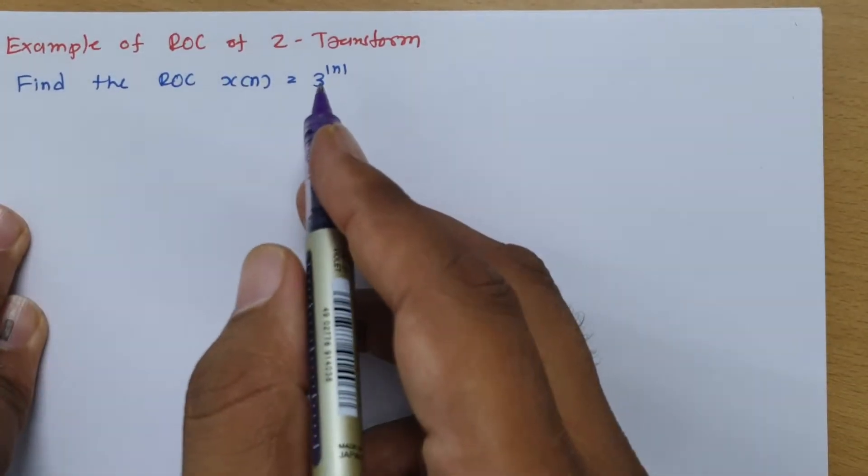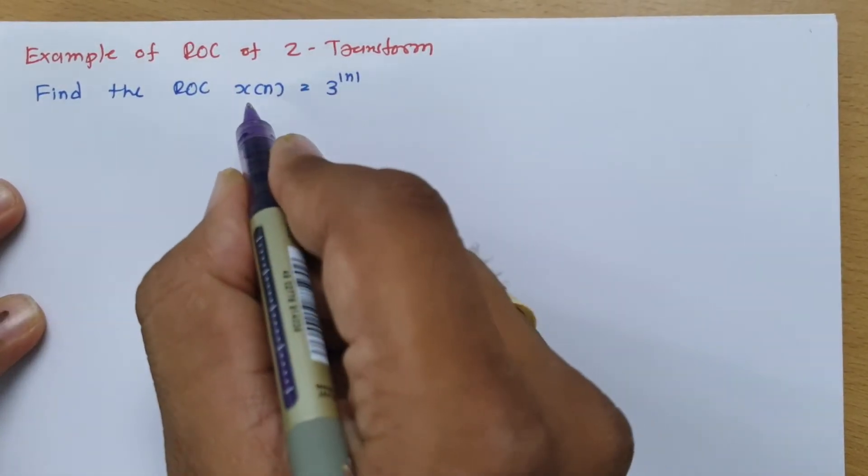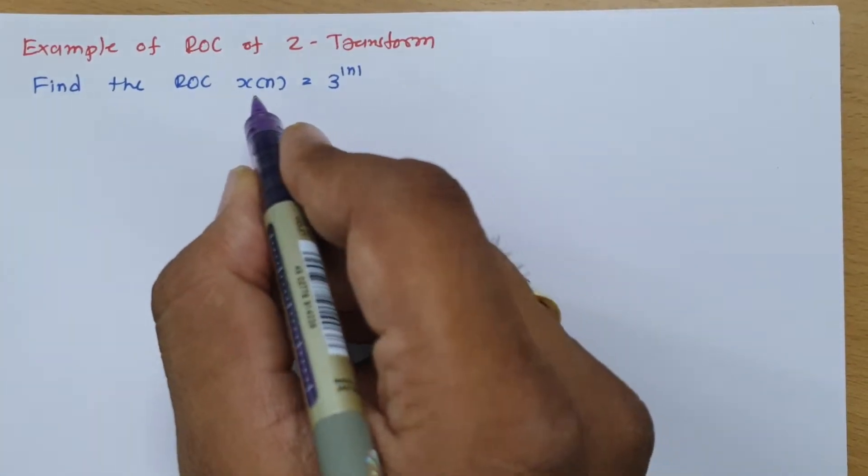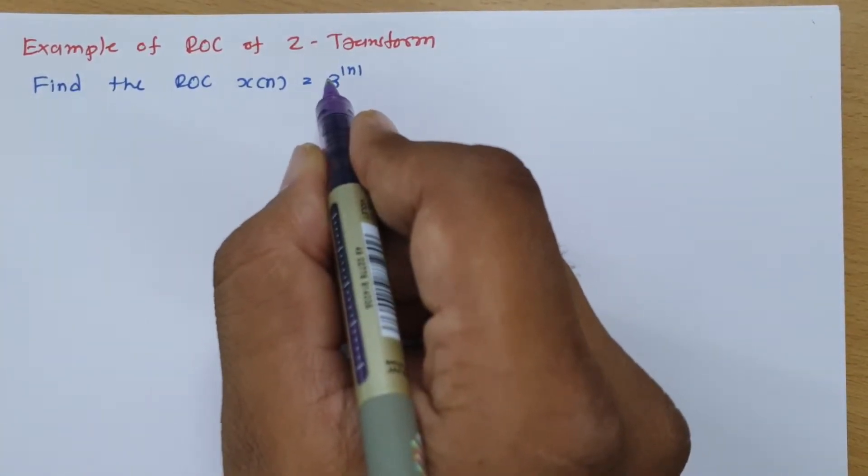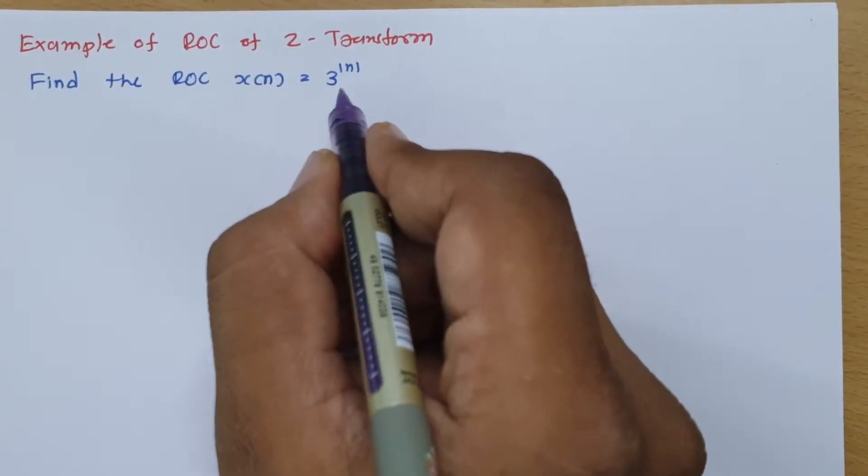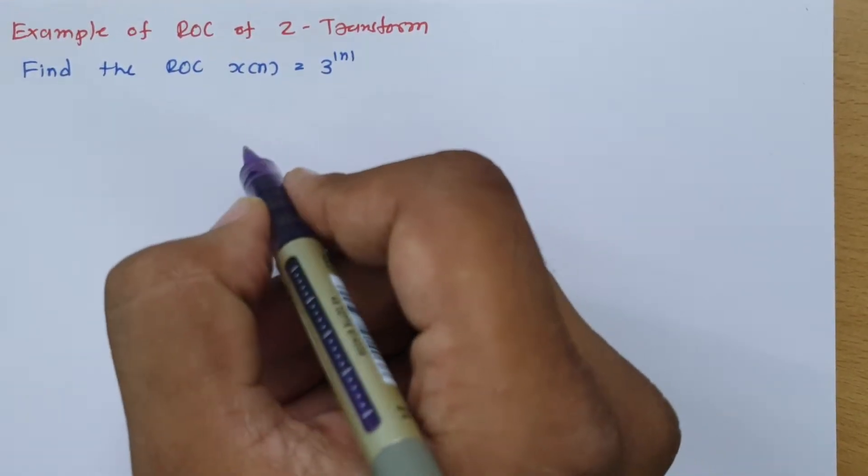Our agenda is to calculate the ROC of this. Now, this signal x(n) has two portions. One is 3 to the power n, which is |n|. So it may go in positive direction or negative direction.